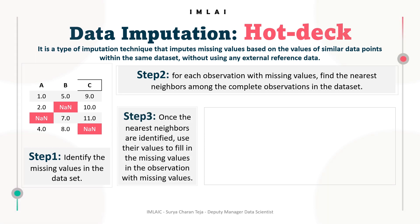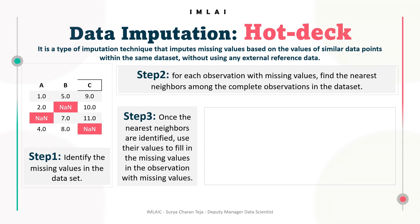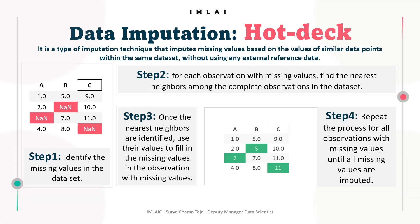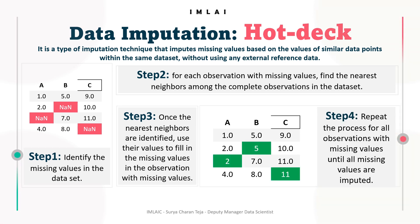Once the nearest neighbors are identified, use their values to fill in the missing values in the observation. This can be done by randomly selecting one or more of the nearest neighbor values, or by averaging or weighing the values of the nearest neighbors. Then repeat the process for all observations with missing values until all missing values are imputed.